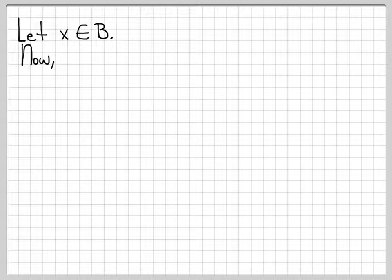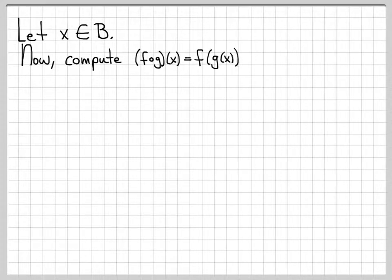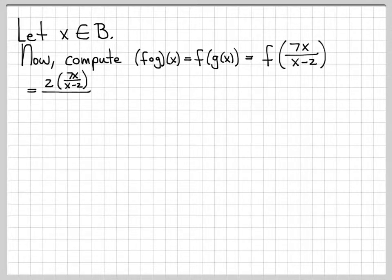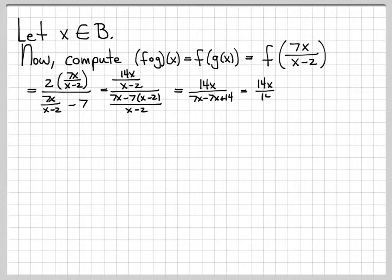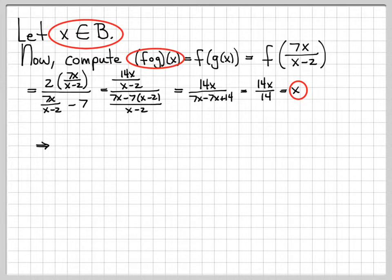Now we need to check that for every x in B, f composed of g is the identity function on B. By definition, this is f evaluated at g(x) = 7x/(x - 2). We replace every x in f with 7x/(x - 2), do a little algebra, multiply out the 2, get a common denominator, the (x - 2) terms cancel, distribute, get 7x - 7x + 14 in the denominator, which gives 14x/14 = x. So f composed of g is indeed the identity function on set B.